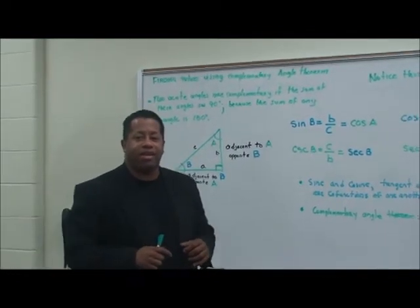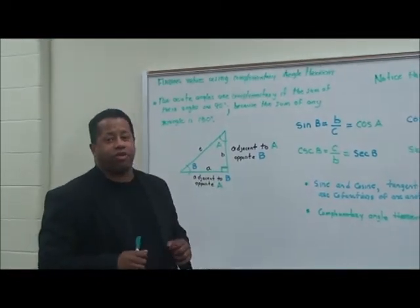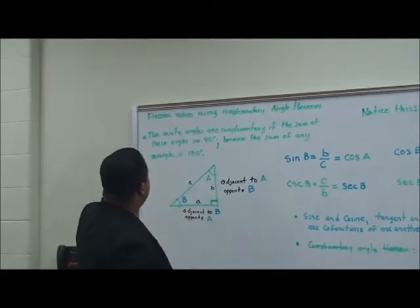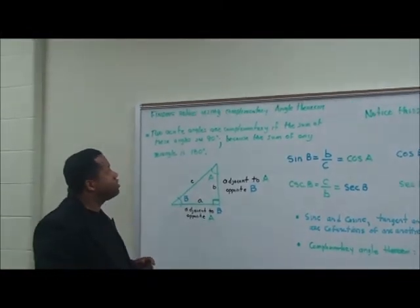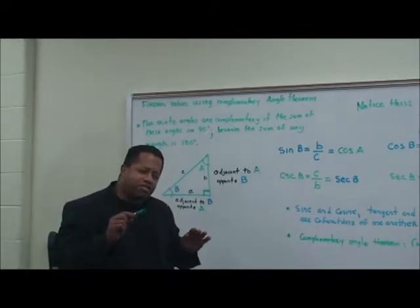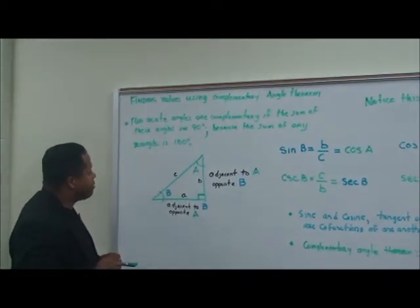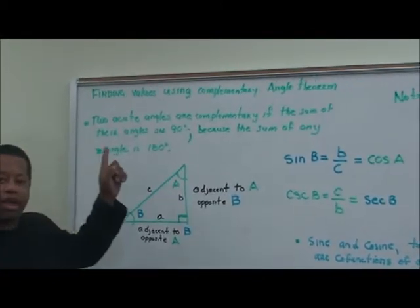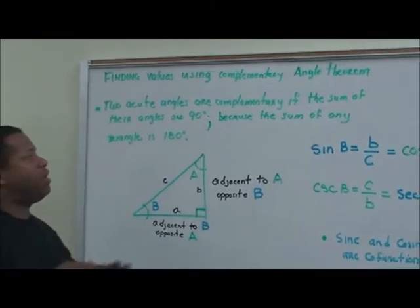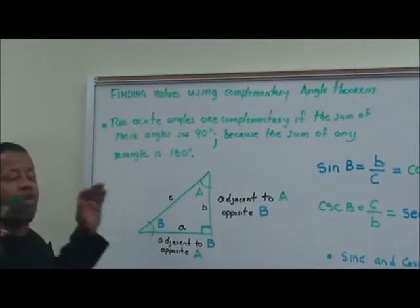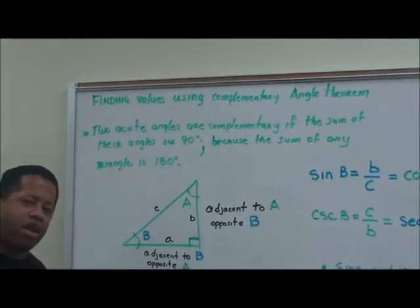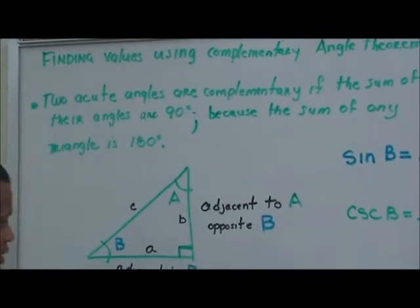Hello and welcome back. This is Professor Daniel Fritz Mathematics and today we're going to talk about finding values using the Complementary Angle Theorem. Let's speak about some general specifics. Two acute angles are complementary if the sum of their angles is 90 degrees, because the sum of any triangle is 180 degrees. Let's look at this triangle here, this typical right triangle.